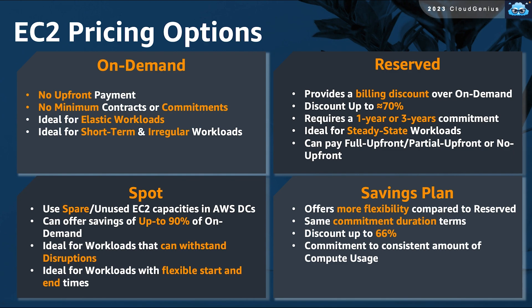What about if your workload is more of a steady-state workload with predictable performance? If you can make long-term commitments of one year or three years, you can choose for that instance to be a reserved instance. You would be able to secure savings that can go up to more than 70% compared to on-demand rates. Multiple factors can affect your discount level, such as the commitment length and how much money you could pay upfront. Remember, with reserved instances, some parameters about your EC2 instance cannot be changed.